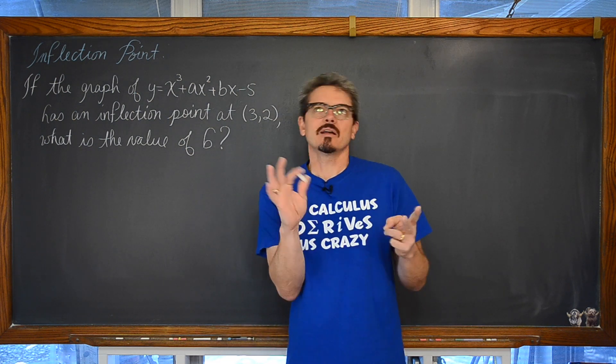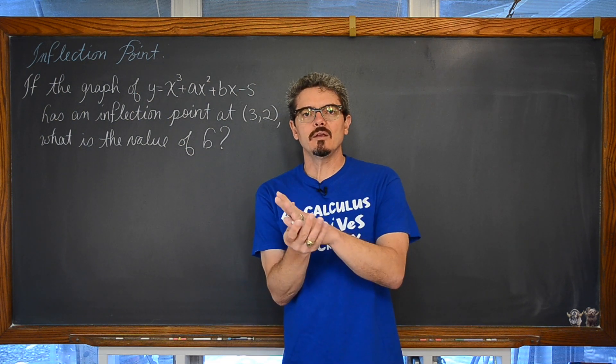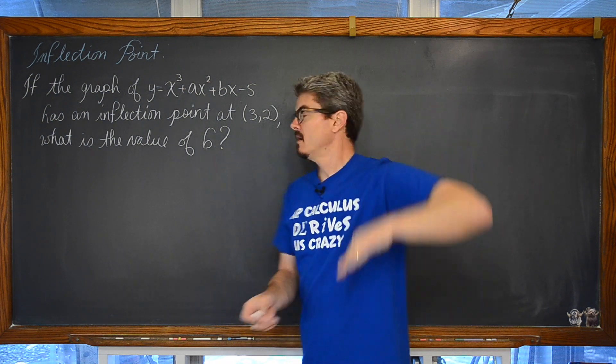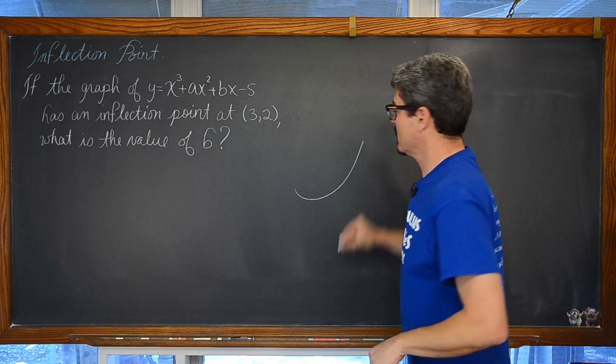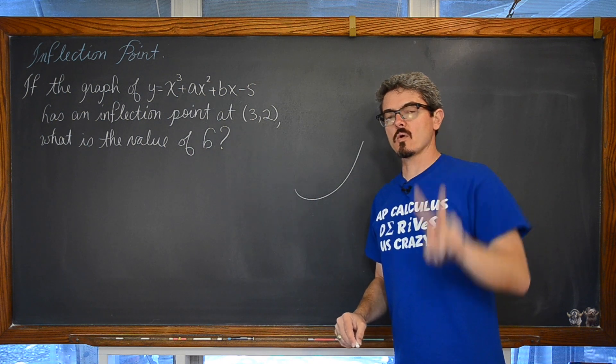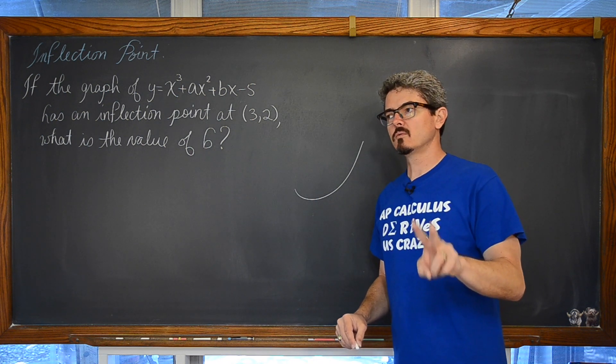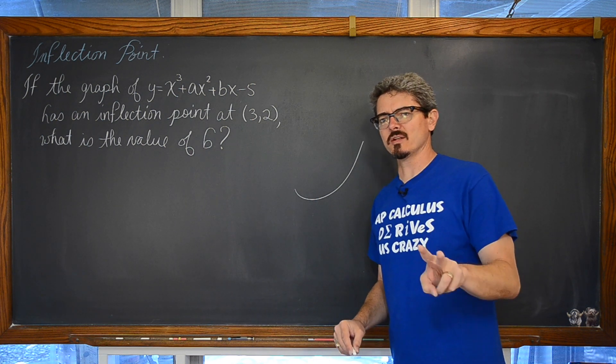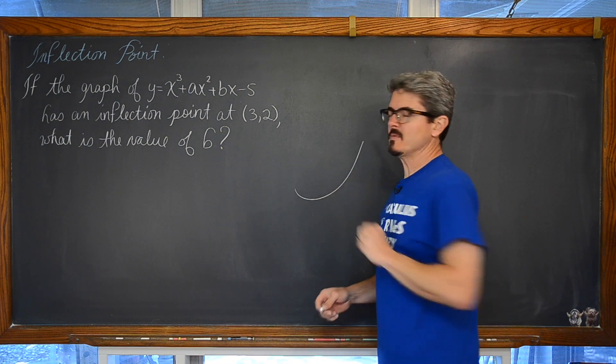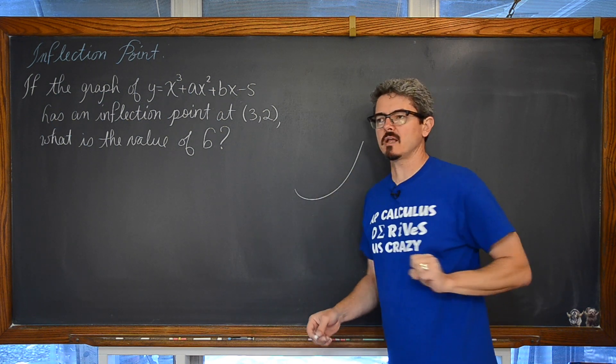And that is exactly what an inflection point is—well, not exactly, but where a function goes from being concave up, something like this, where the second derivative is greater than zero. If f double prime is greater than zero, then f is concave up.